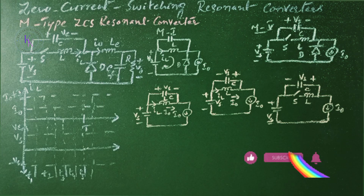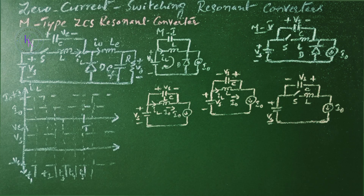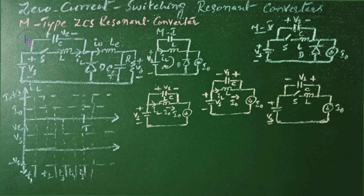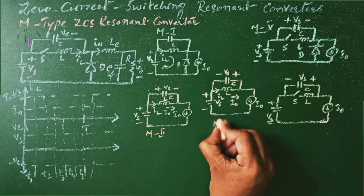Now the M type zero current switching resonant converter. The M type ZCS resonant converter is shown in this figure. The circuit operation can be divided into modes whose equivalent circuits are shown here. We shall redefine the time origin from T equals 0 at the beginning of each mode. The mode equations are similar to those of the L type ZCS resonant converter, except for modes 2, 3, and 4.